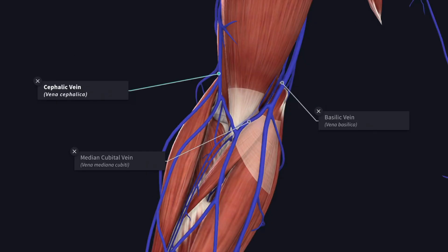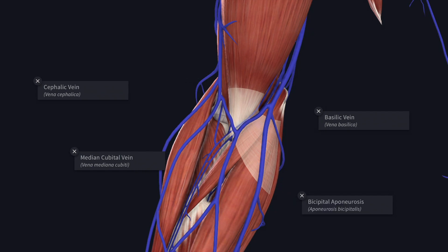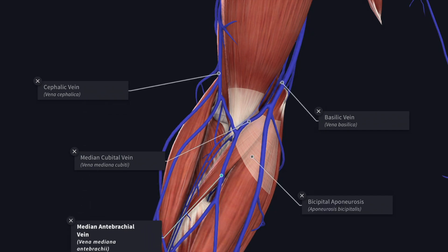The median cubital vein is an anastomosing vein in front of the elbow that passes upward and medially from the cephalic vein to the basilic vein. It lies in front of the bicipital aponeurosis, which separates the median cubital vein from the brachial artery and the median nerve. Usually, the median cubital vein lies between the lateral and medial cutaneous nerves of the forearm and communicates with the deep veins of the forearm. Sometimes it receives a tributary from the median antebrachial vein, and the median antebrachial vein drains blood from the superficial palmar plexus.